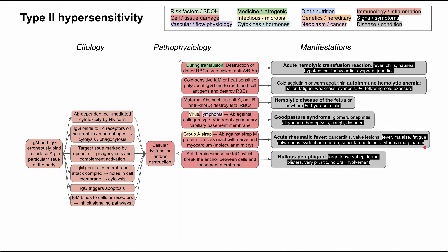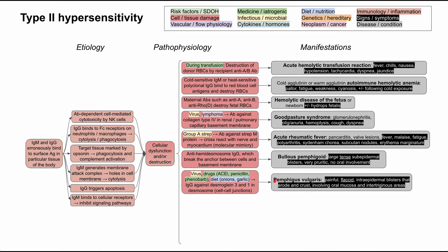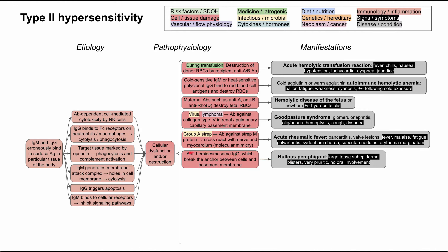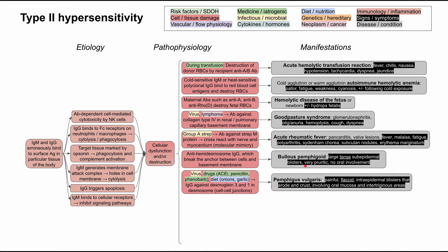Bullous pemphigoid is a type 2 hypersensitivity skin disease differentiated from pemphigus vulgaris. In bullous pemphigoid, you have IgG antibodies against the hemidesmosomes — proteins that anchor cells to the basement membrane below them. When these antibodies break that anchor, cells separate away from the basement membrane. The end result is large, tense, subepidermal blisters. These blisters typically don't break as easily, the patient has very itchy skin, and it typically does not involve the mouth.